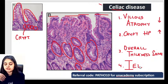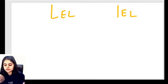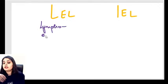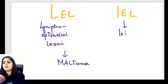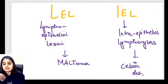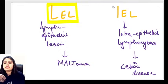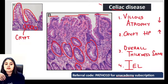Important exam tip: do not confuse LEL (lymphoepithelial lesion) with IEL (intraepithelial lymphocytes). LEL refers to a tumor — MALToma — where lymphoid cells invade the epithelium. IEL refers to innocent-looking inflammatory lymphocytes within the epithelium, characteristic of celiac disease. In exam stress, these can look the same, so be careful.